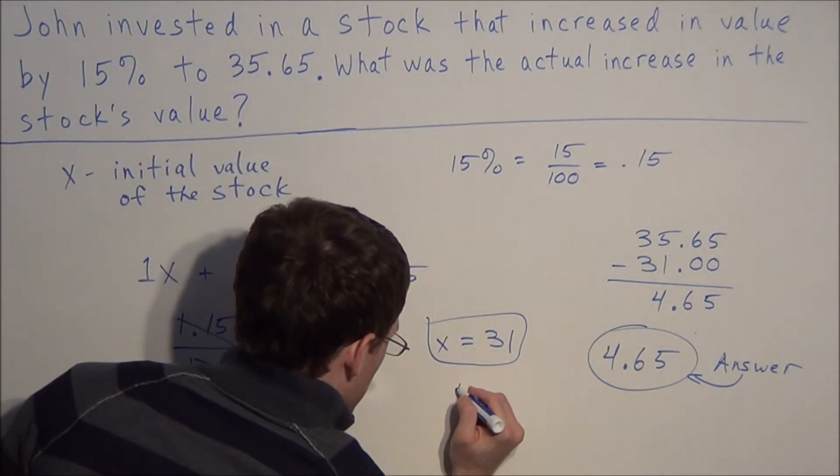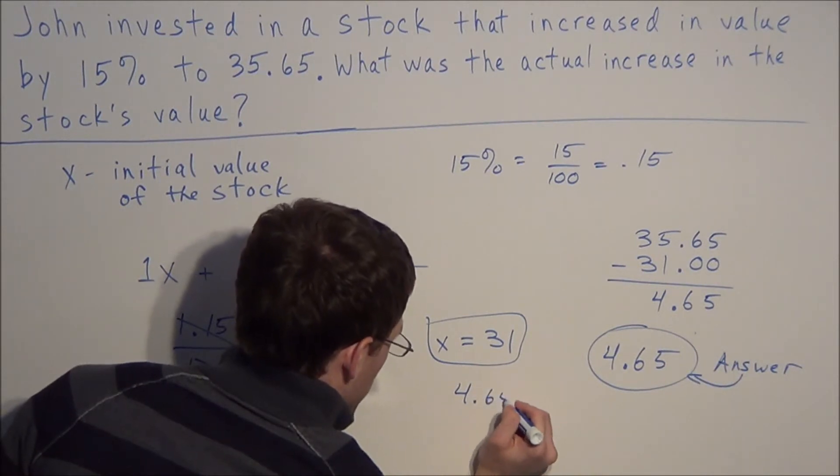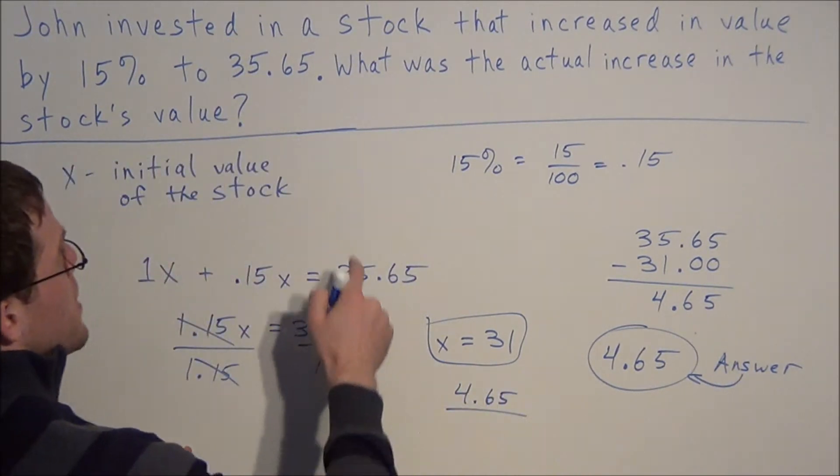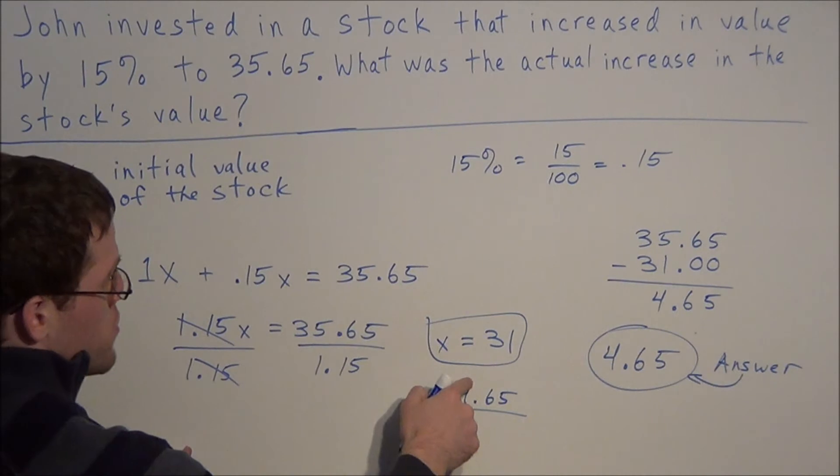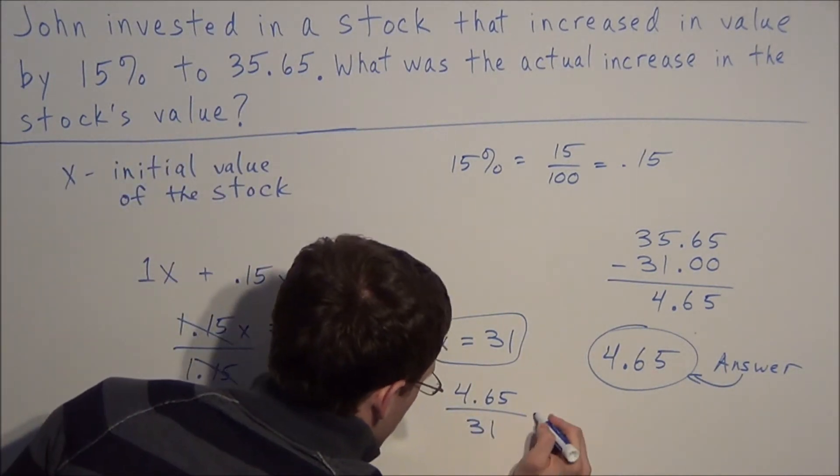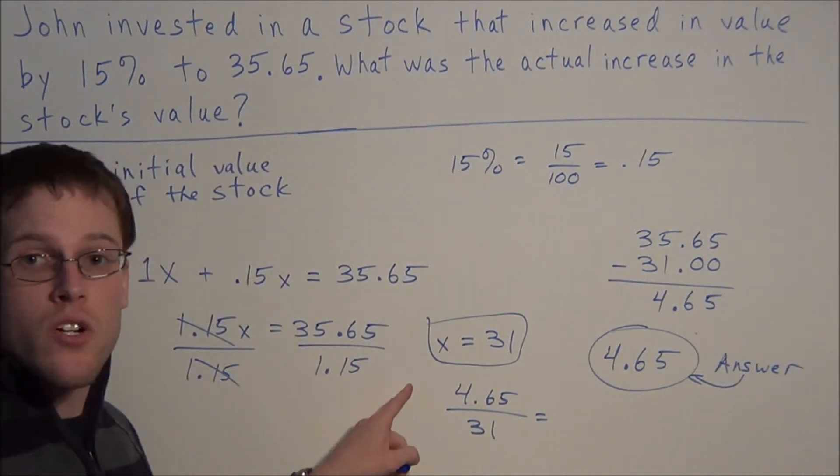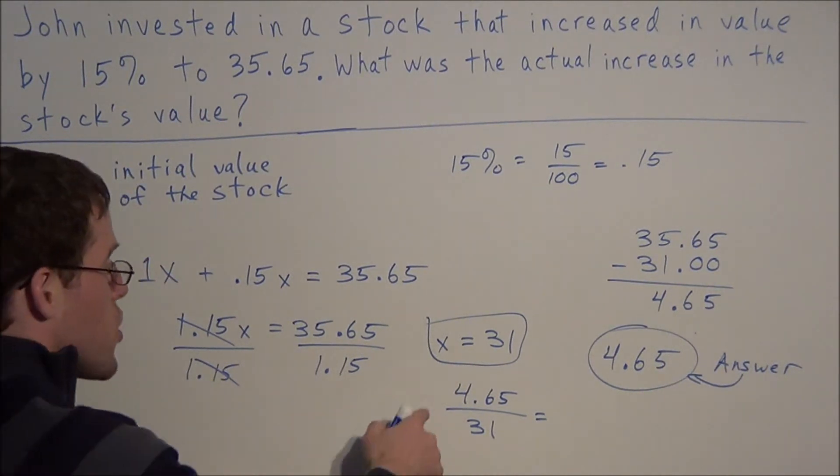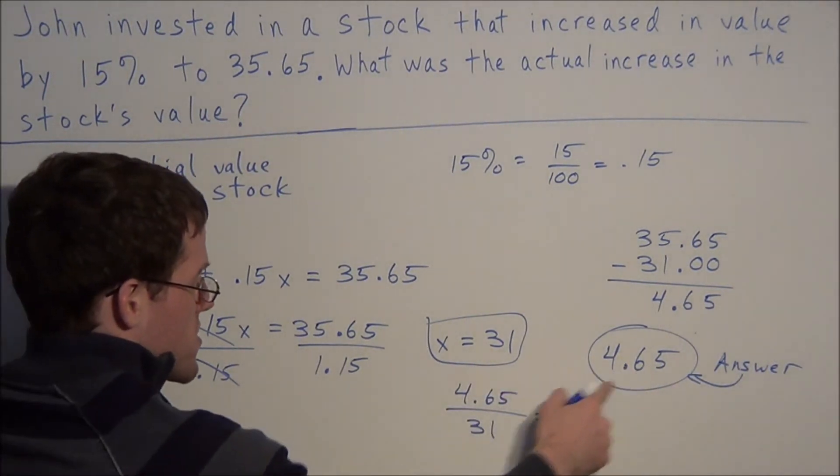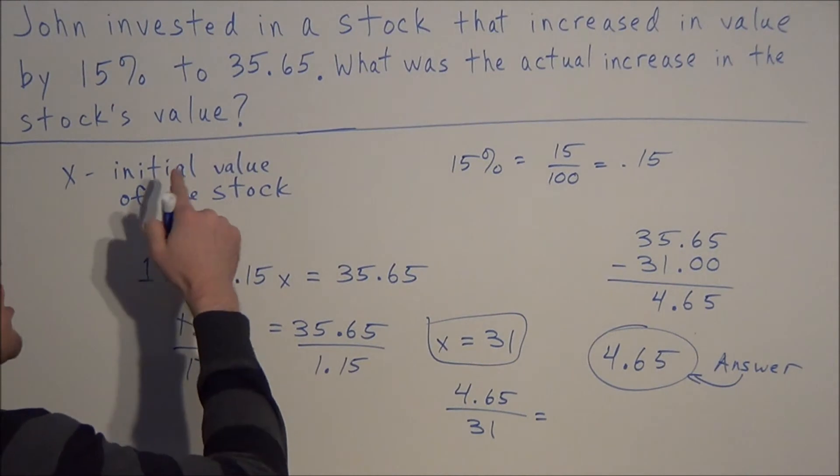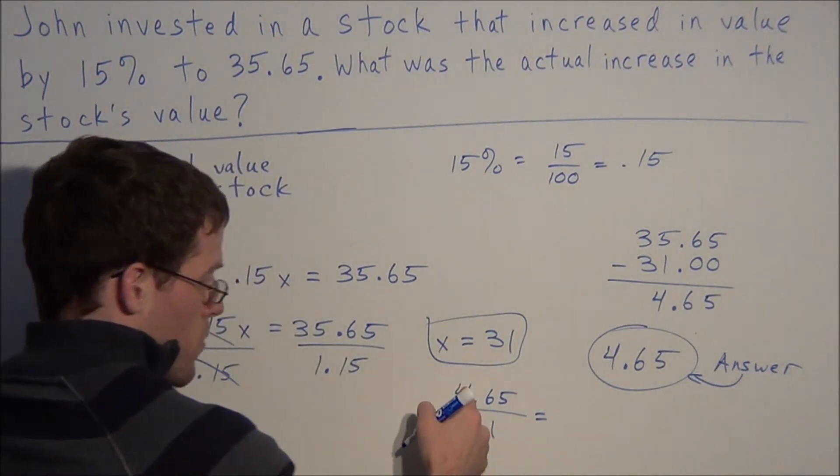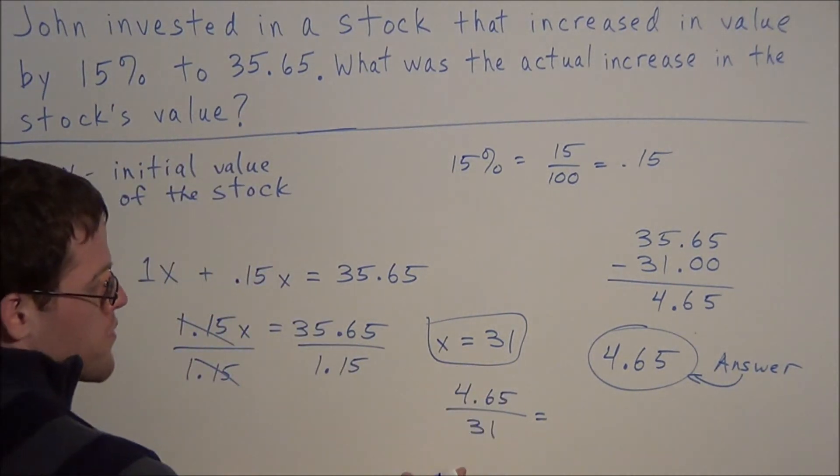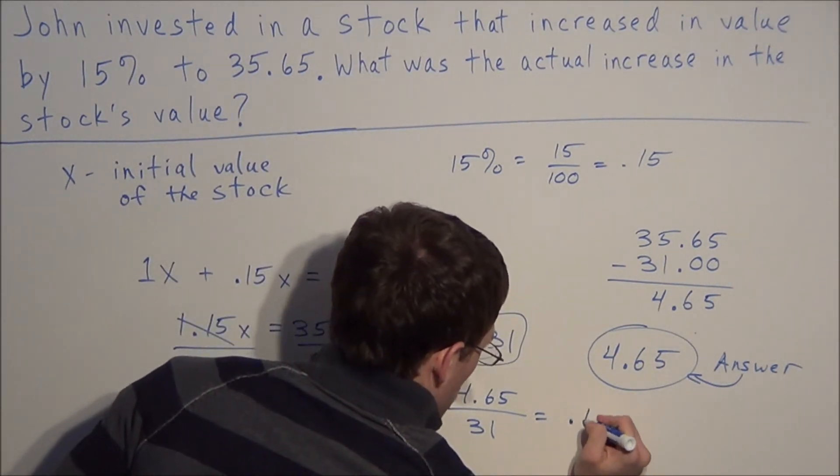So if we look at 4.65, which represented the actual increase in the stock's value, and we divide this by 31, this would represent the percent increase in the stock, because it went up 4.65 out of the 31 original points. So when we divide this, 4.65 divided by 31, we should get 0.15.